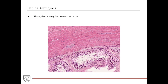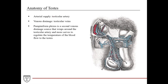Here's a great section of the tunica albuginea, and you can appreciate that it's thick dense irregular connective tissue — very densely packed, very fibrous, with a significant collagen component and no uniform direction as you would see in dense regular connective tissue. As you can see, it lies outside of what are called the seminiferous tubules, which are the functional tissue of the testes. It encloses them to provide significant protection. The arterial supply is carried by the testicular artery, and the venous drainage is via the testicular veins.